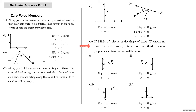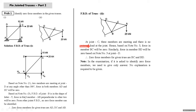Now in the next slides we will identify zero force members without any calculations. This is the first problem of today's lecture. It is a Type 1 truss supported on one hinge and one roller — this is the sixth problem on pin jointed trusses. The problem asks: identify the zero force members in the two given trusses.